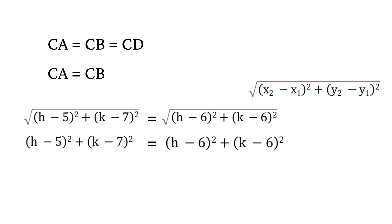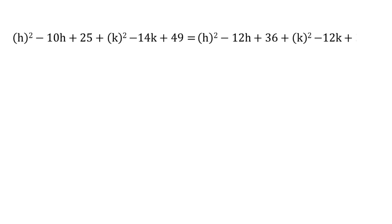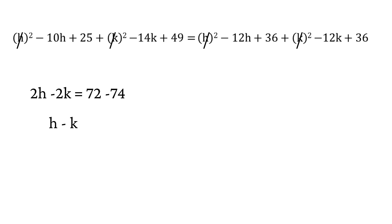Square both sides to remove the square root. By using the (x - y)² formula we can further expand. Now by reducing and solving the equation we get h minus k equals minus 1. Let's name this as equation 1.